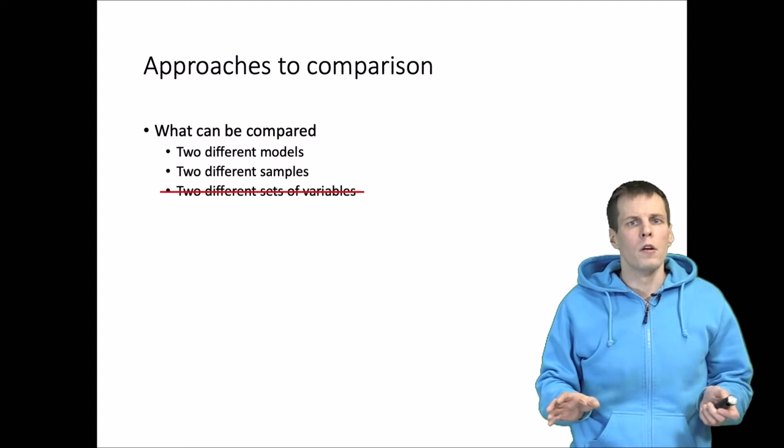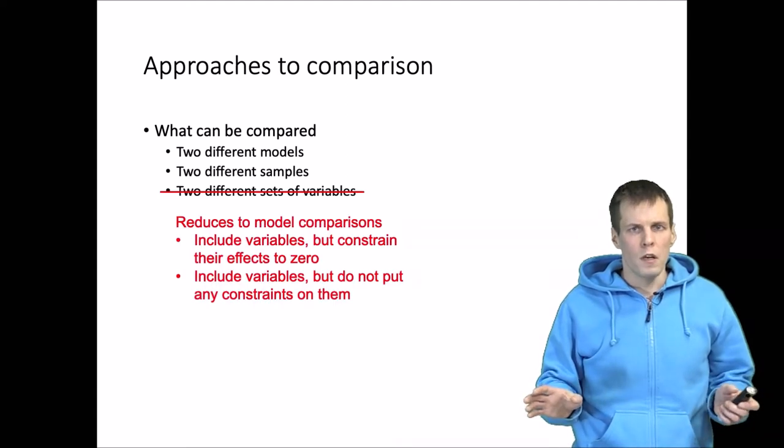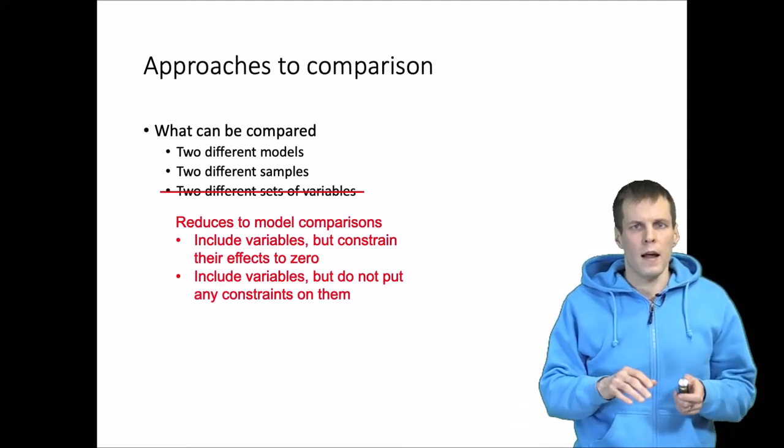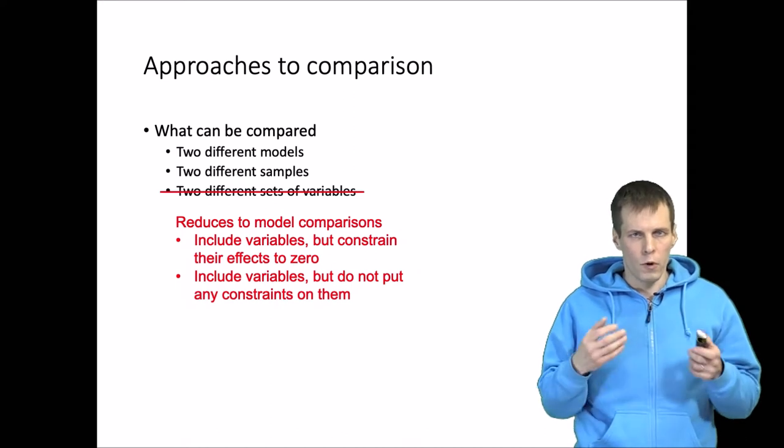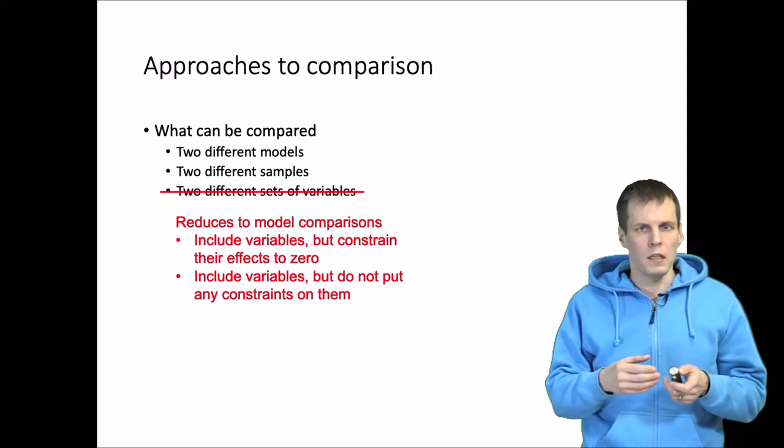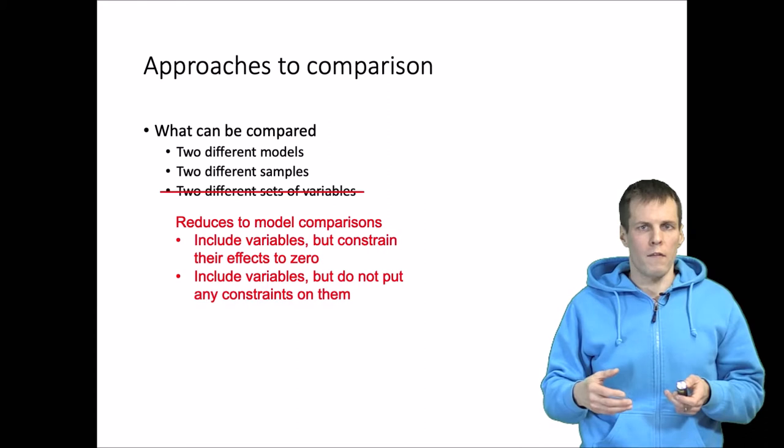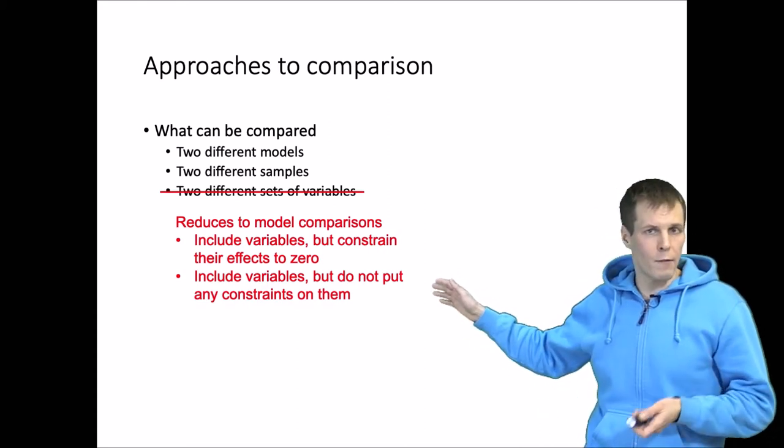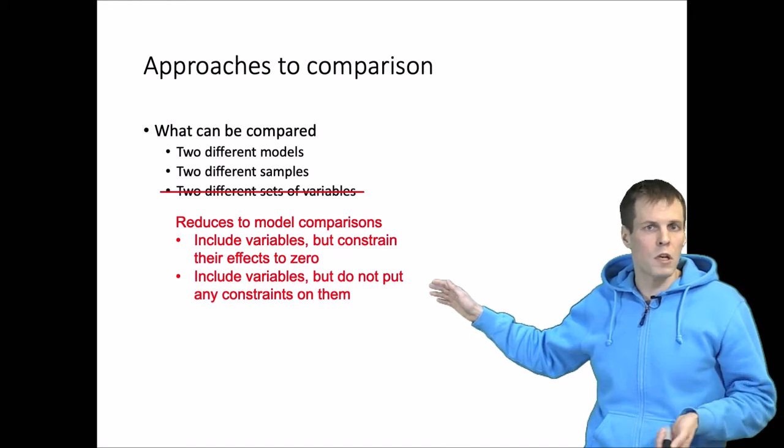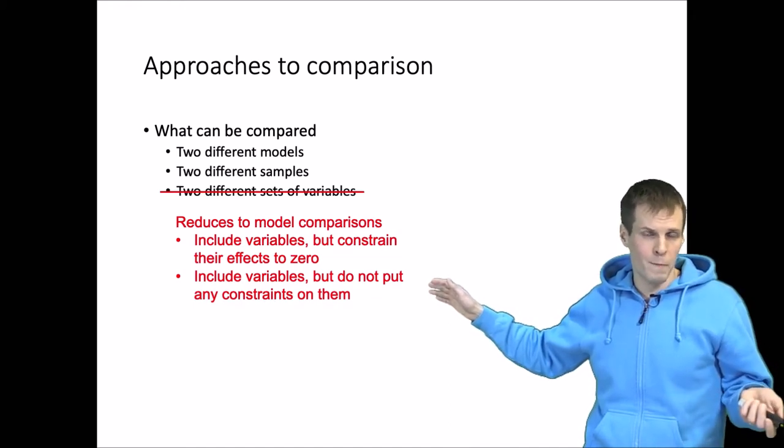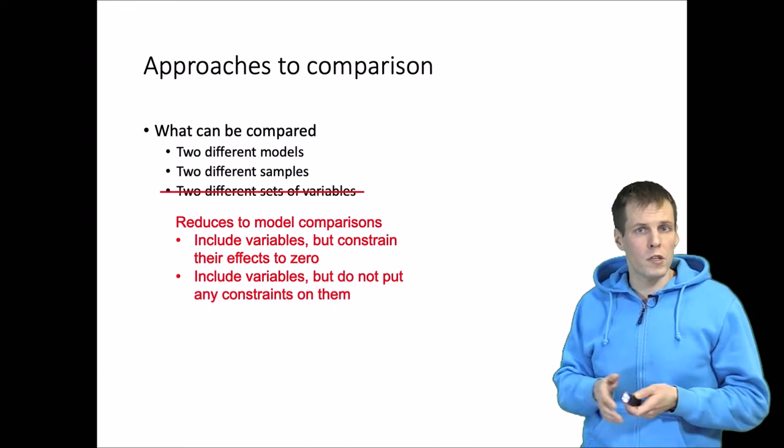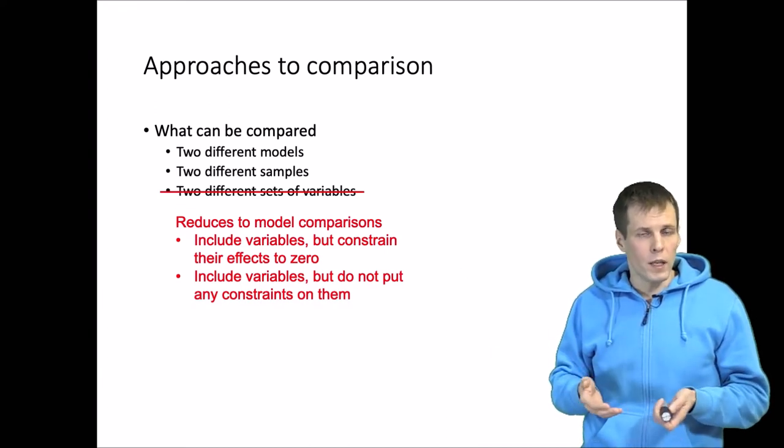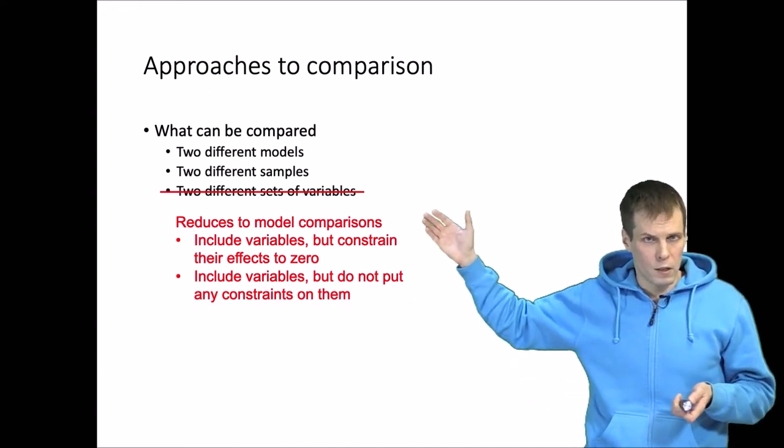If you want to compare two different sets of variables, then you form a superset and you estimate one model to the superset, constraining some variables to have no effects or allowing them to be freely correlated with everything in the model, including error terms, in which case they wouldn't cause any misfit depending on what kind of research question you would be answering.